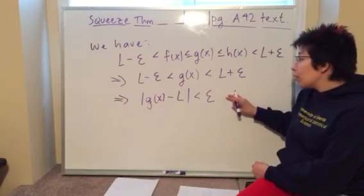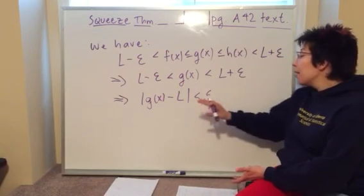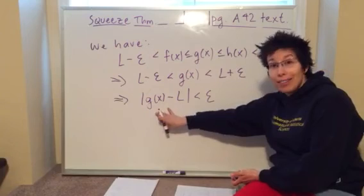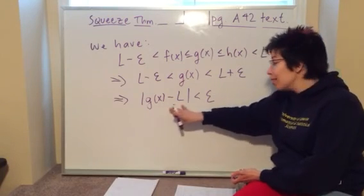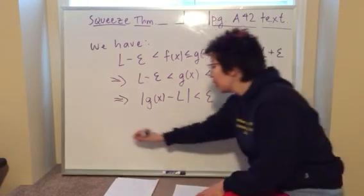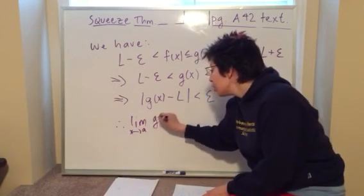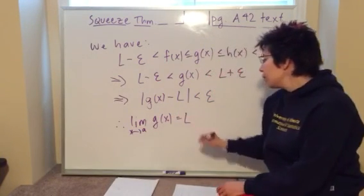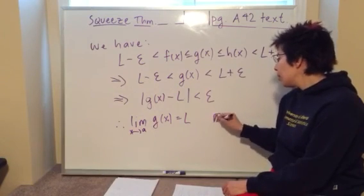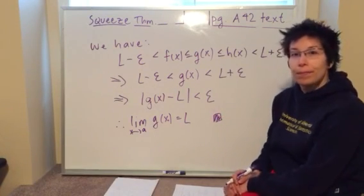So, either here or here is a good place to then say, well, this is what it means for the limit as x approaches A of g(x) to equal L. So, we can say, therefore, the limit as x approaches A of g(x) is equal to L, and we can conclude our proof there. Thank you.